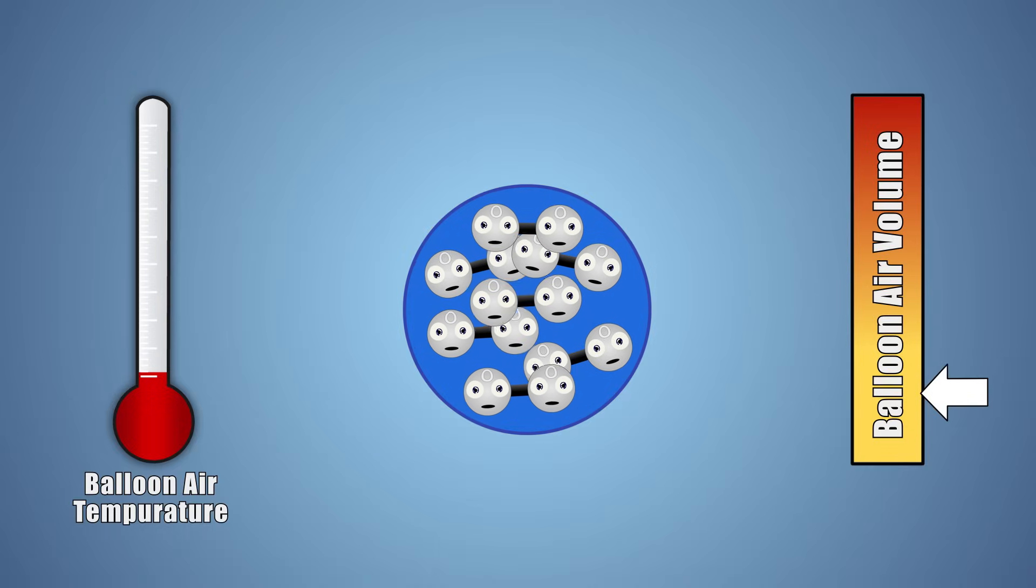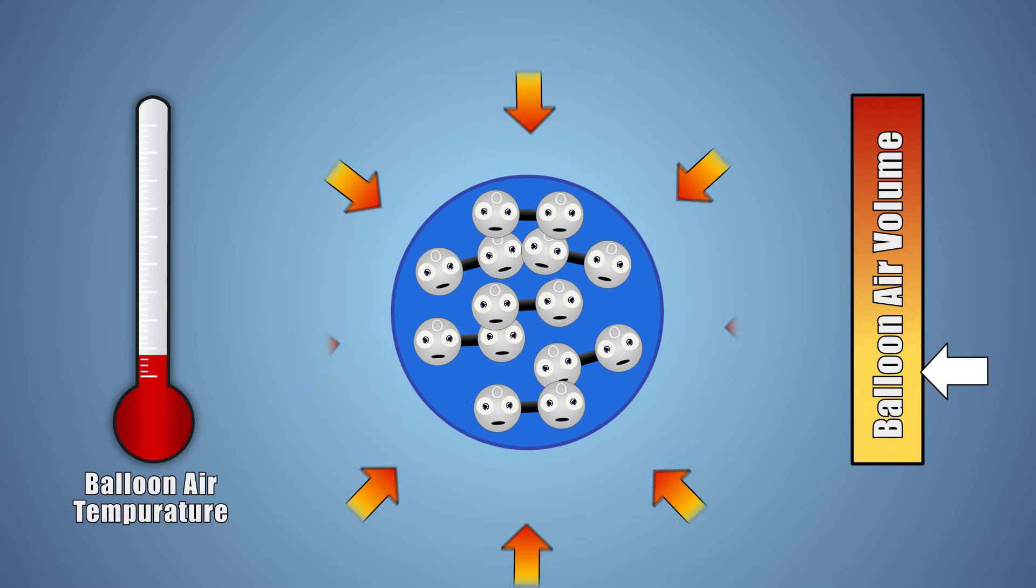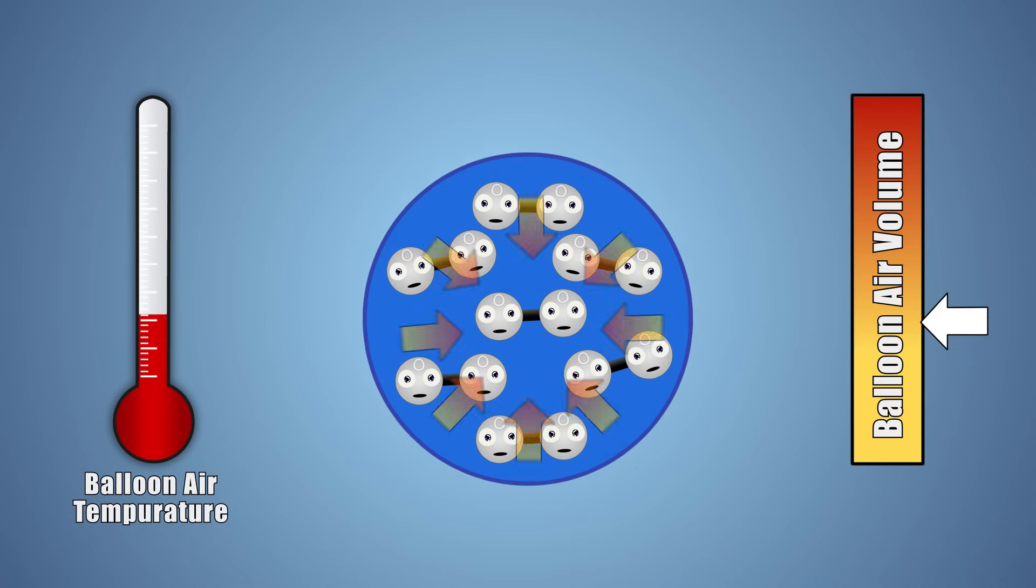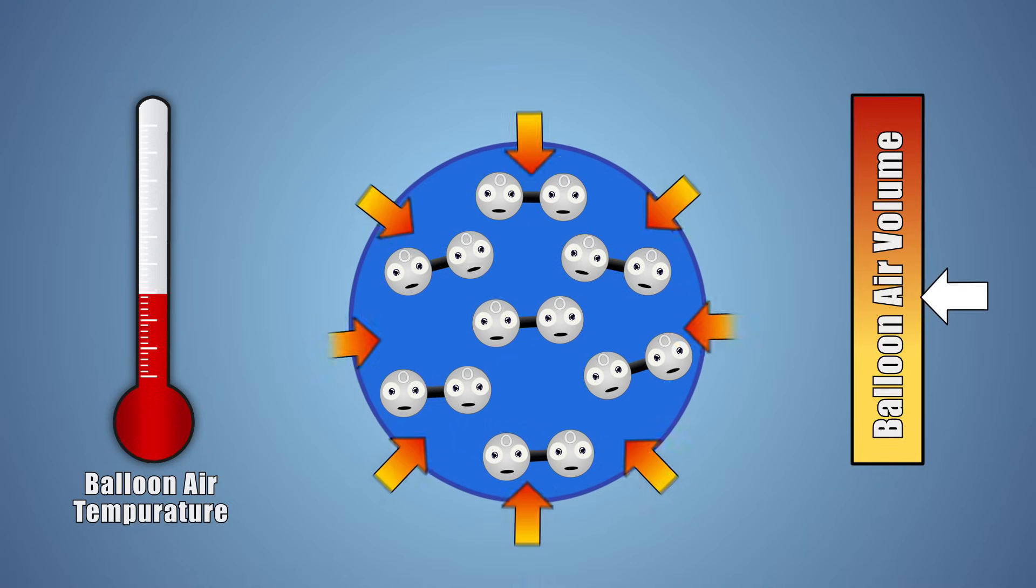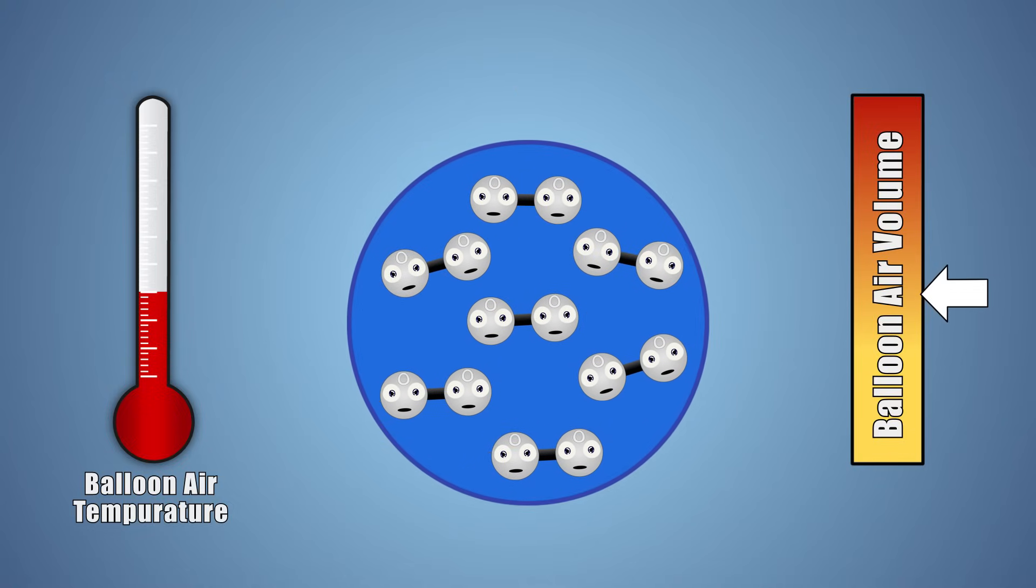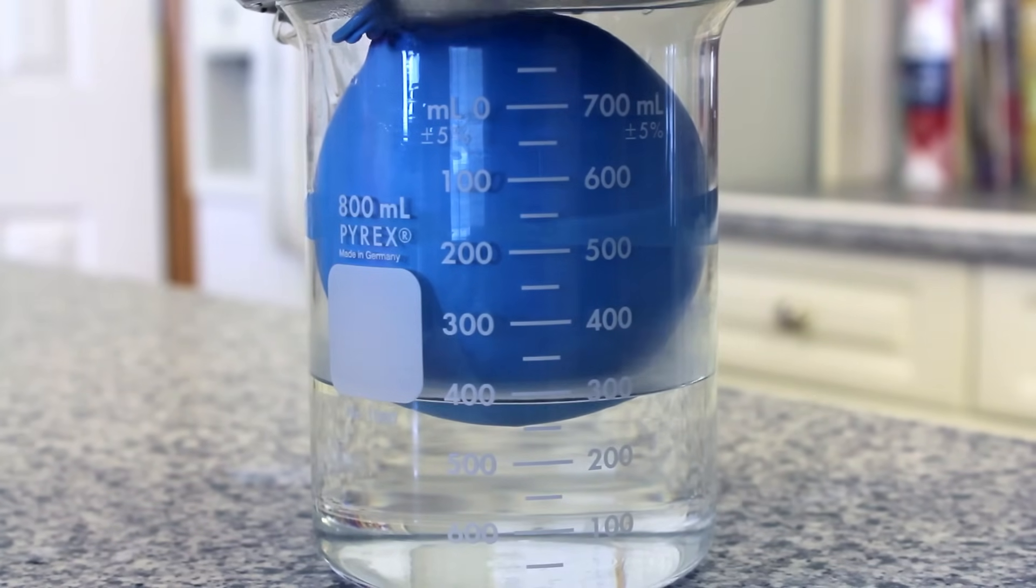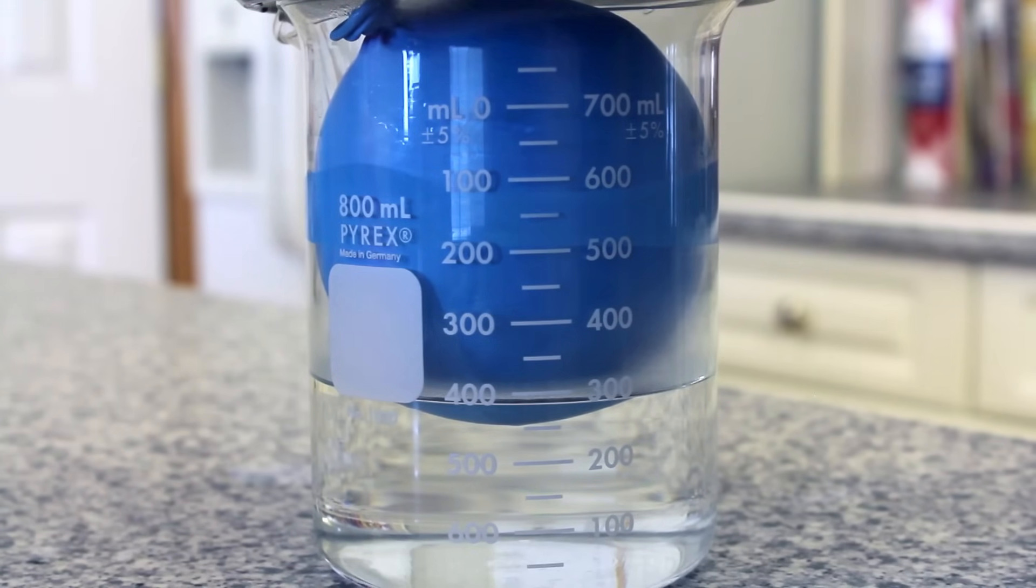When we remove our balloon from the freezer, the air molecules inside will gradually gain extra energy from the air in the environment, raising its temperature, causing the balloon to increase in volume back to its original size. By changing the temperature of our balloon, we can clearly see the directly proportional relationship between the temperature and volume of an ideal gas.